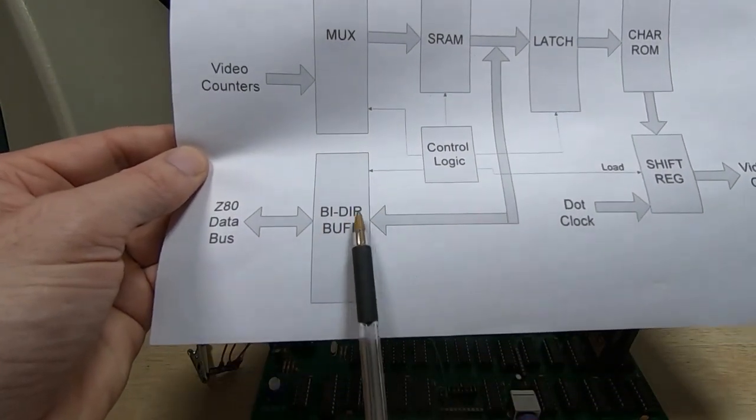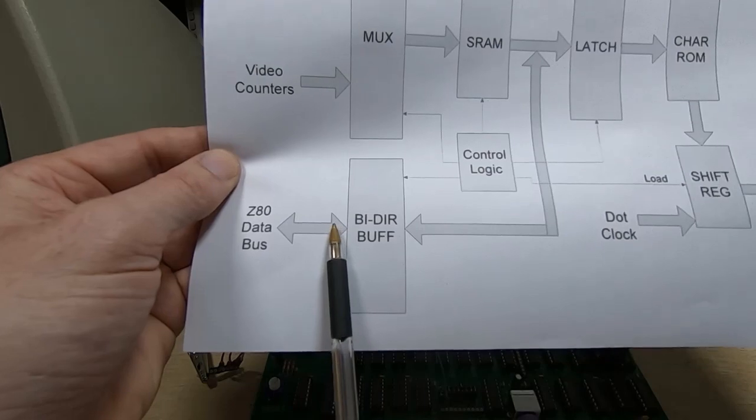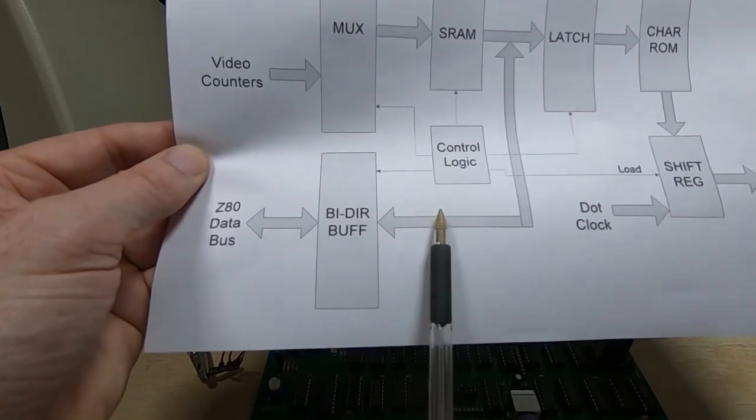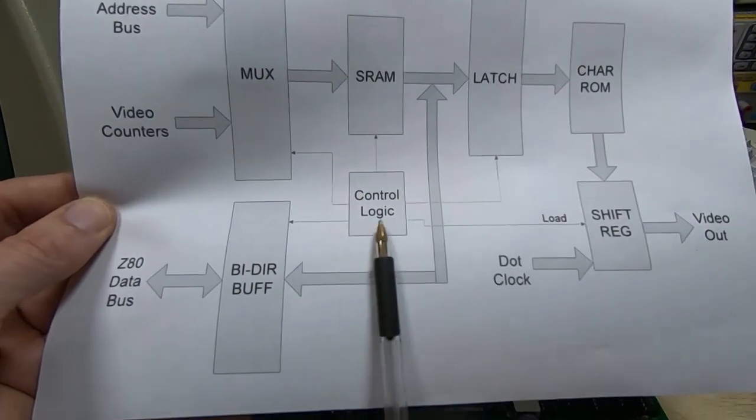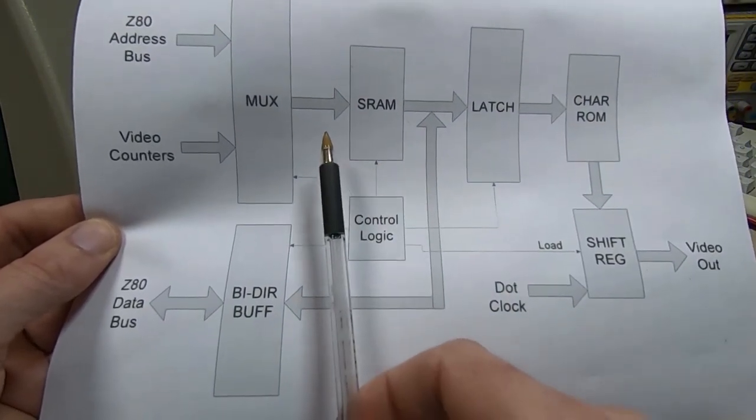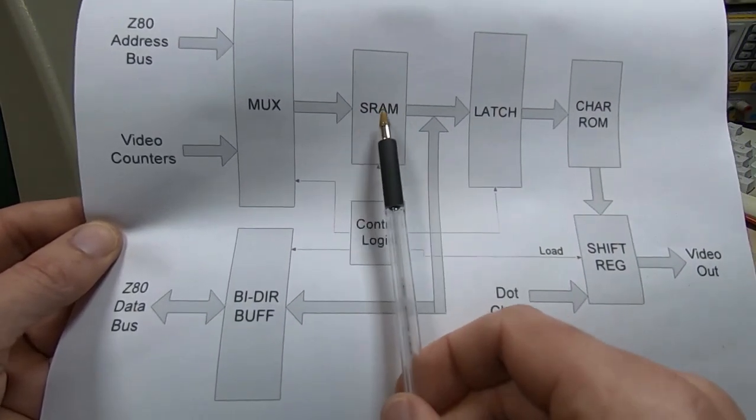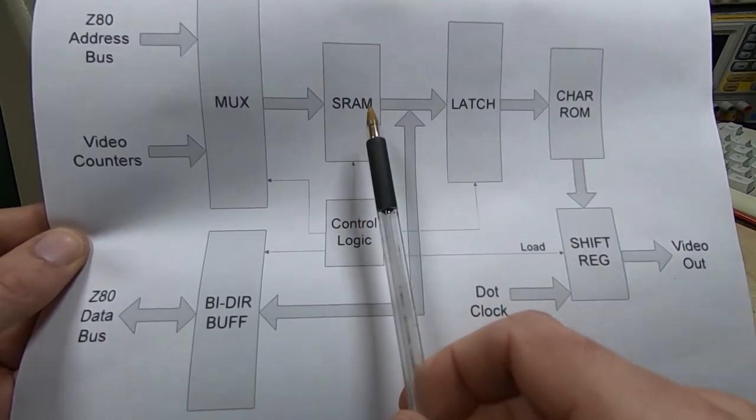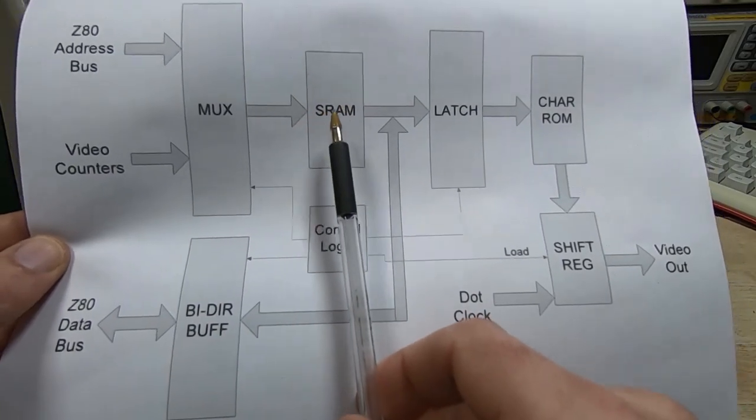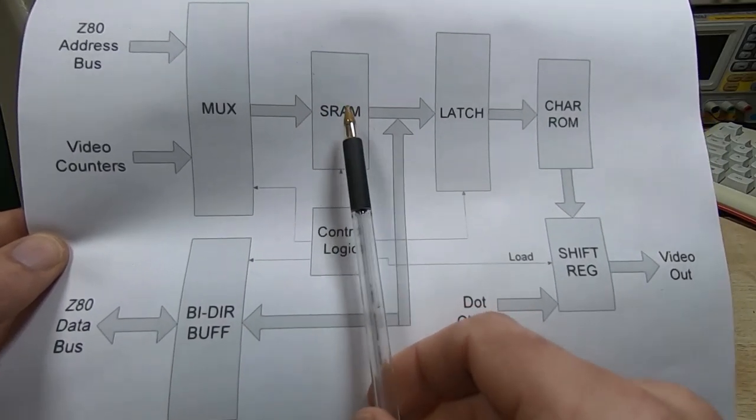We've also got this bi-directional buffer that's just used to allow data to be sent from or back to the Z80. It's quite a simple system but requires some control logic. The upshot is we can't stop the world and wait for the data to be written to the SRAM. We need to find some way to update the SRAM and remove the artifacts without stopping this process.